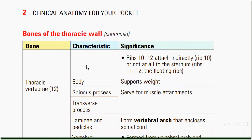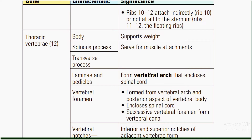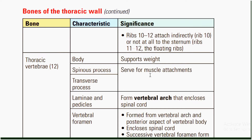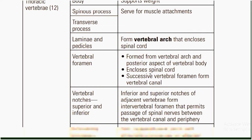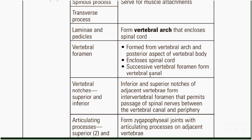Characteristics of thoracic vertebra include the body, which supports the weight; spinous processes and transverse processes serve for muscle attachment. Thoracic vertebrae have lamina and pedicles that form the vertebral arch, which encloses the spinal cord. Vertebral foramina are formed from the vertebral arch and the posterior aspect of the vertebral body. Successive vertebral foramina form the vertebral canal. Superior and inferior vertebral notches of adjacent vertebrae form intervertebral foramina that permit passage of spinal nerves between the vertebral canal and the periphery.